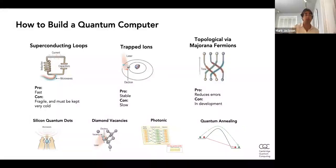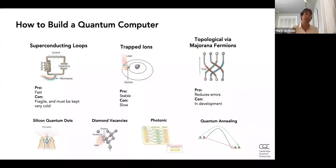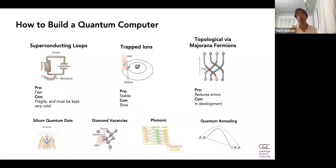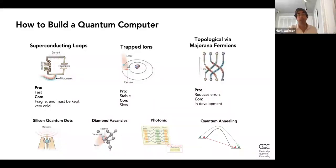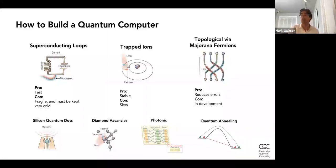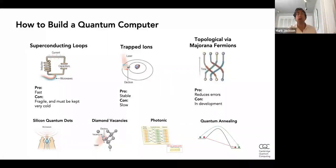Superconducting qubits require effective refrigerators kept near absolute zero, making the infrastructure bulky, difficult, and expensive. Another approach is the trapped ion approach, which uses lasers to trap charged particles. One advantage is that the qubits are much more stable and can last far longer than superconducting qubits. A disadvantage is that operations are very slow. Fortunately, trapped ion technology works at basically room temperature.